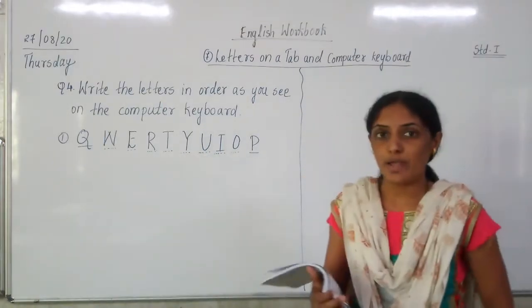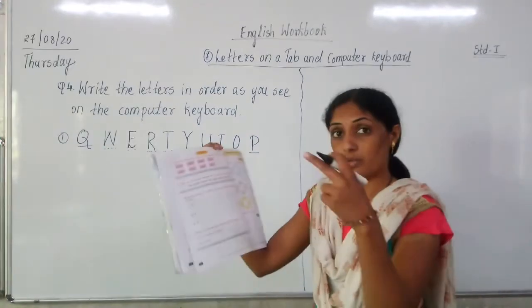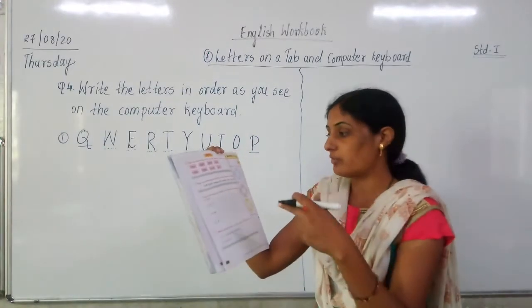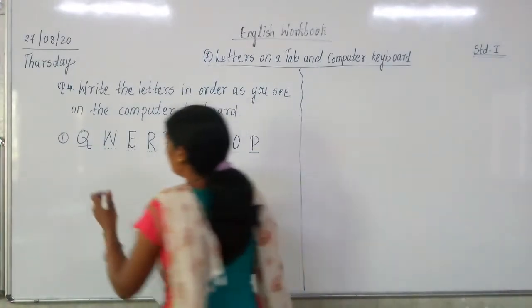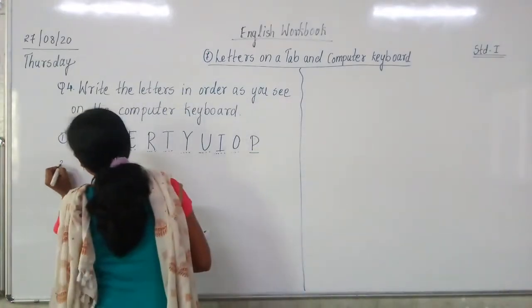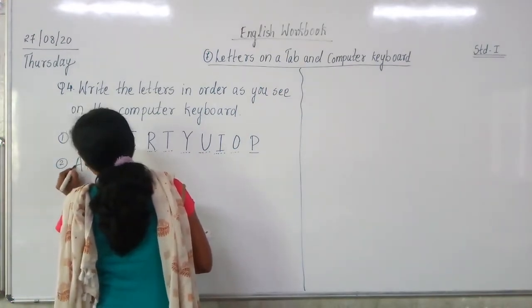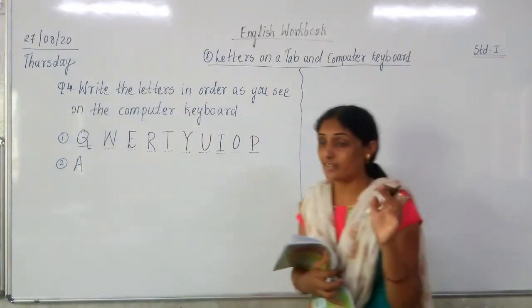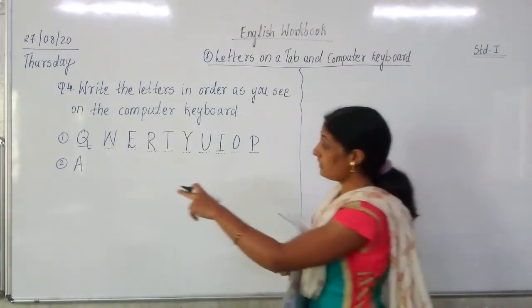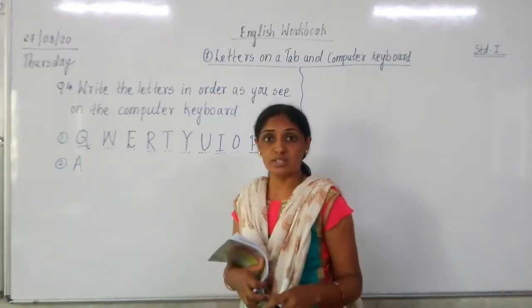Have you got it? In this way you have to write down those letters in your English workbook. Second example: the letters which start with A. They are not in alphabetical order — it is not like A to Z.